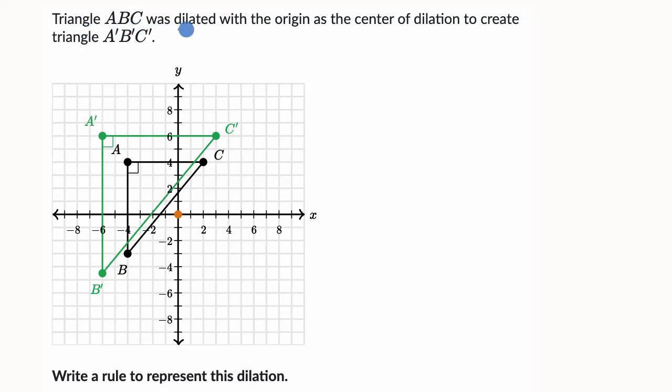We're told triangle ABC was dilated with the origin as the center of dilation to create triangle A prime, B prime, C prime. And we can see that ABC, with the origin as a center of dilation, was now dilated and essentially scaled to triangle A prime, B prime, C prime.